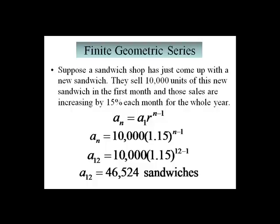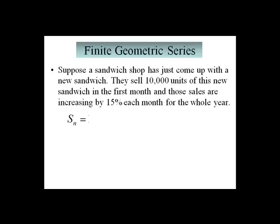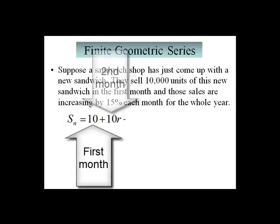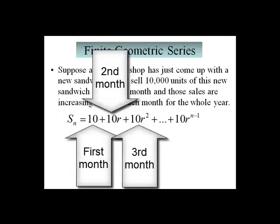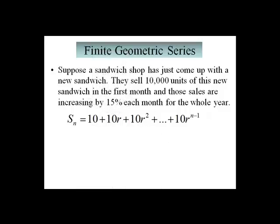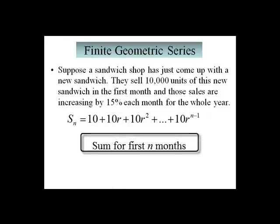Our goal is to find the amount for the whole year, so we're actually summing up a geometric series. We'll use S sub n to denote the sum of a series, and we're going to talk about it first doing it for n months. We add up our terms: 10,000 plus 10,000 times our common ratio, plus 10,000 times our common ratio squared, and so on, all the way up to 10,000 times our common ratio to the n minus 1.